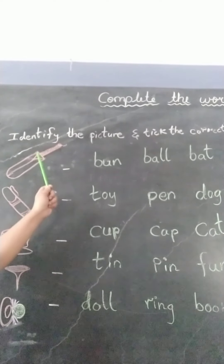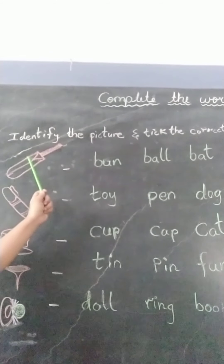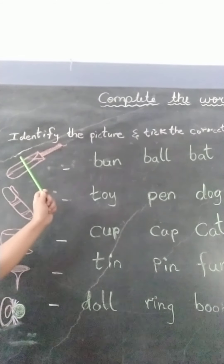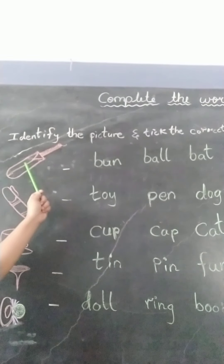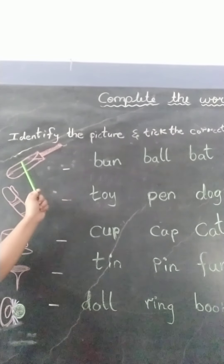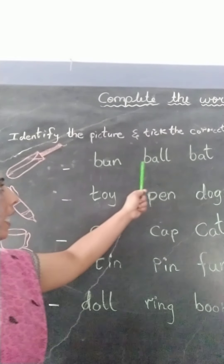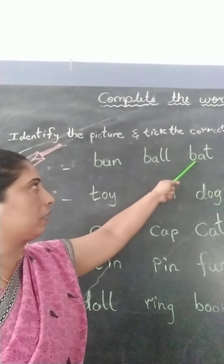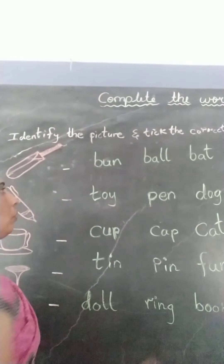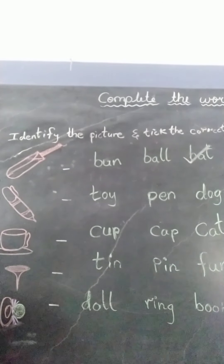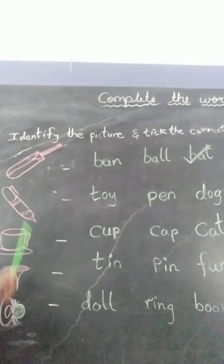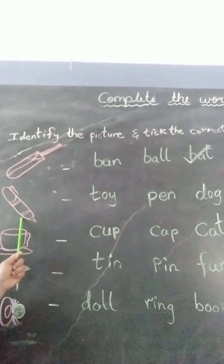So children, tick the correct word — the spelling of bat. The spelling of bat is B-A-T, bat. So B-A-T, bat comes here. So tick the word B-A-T, bat.